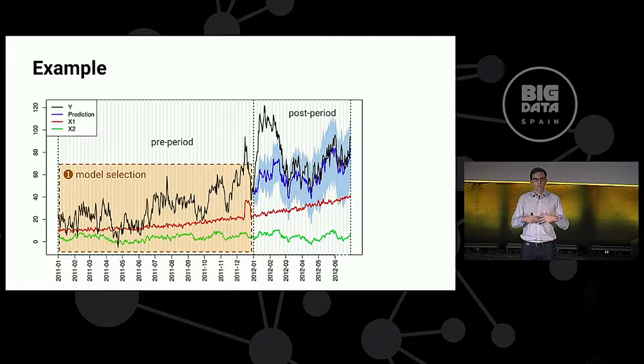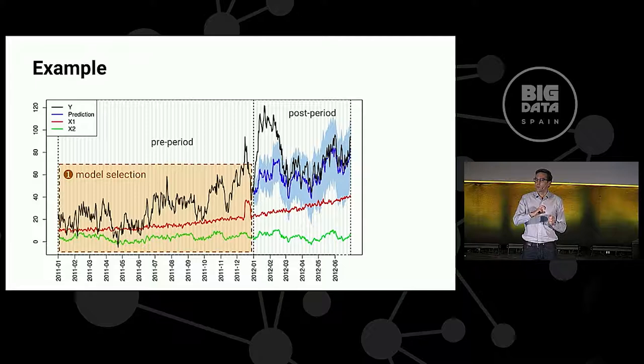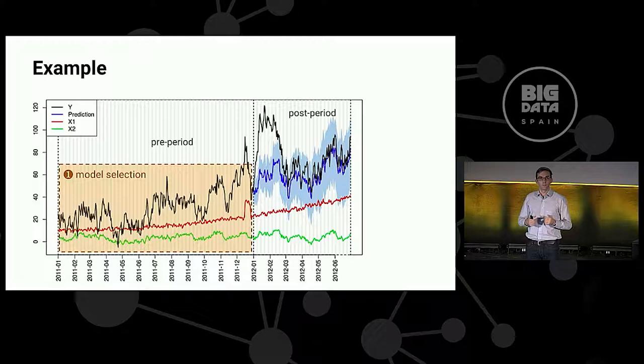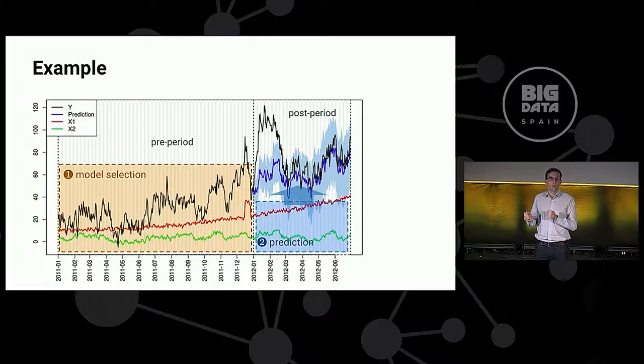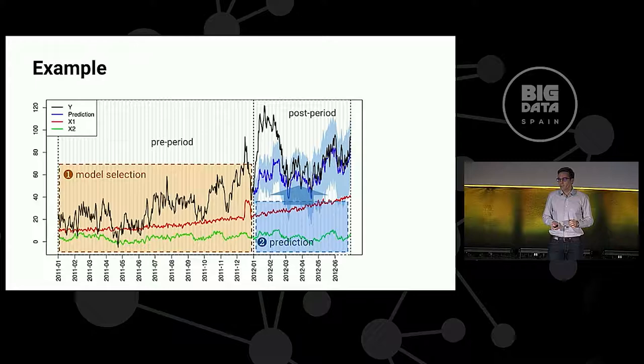So here's our strategy then in a nutshell. We want to train a model, a statistical model, a machine learning model, any kind of model really, to learn that relationship in the pre-period. Learn the relationship between how we can explain black as a function of red and green. And then we're going to apply that model in the post-period. And that prediction is going to give us our counterfactual estimate. So we train our model in the pre-period and then apply the model in the post-period. That's the entire idea behind synthetic control estimators.